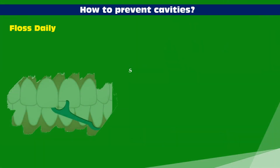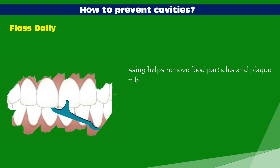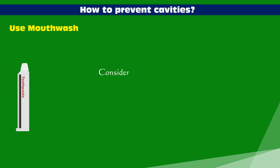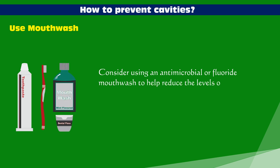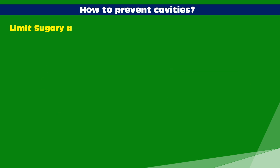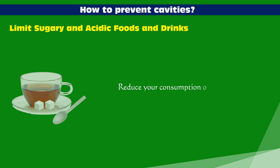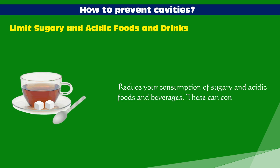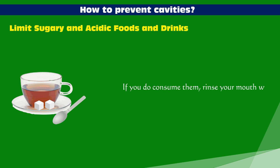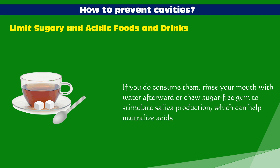Floss daily: flossing helps remove food particles and plaque from between your teeth and along the gum line where your toothbrush might not reach — make it a daily habit. Use mouthwash: consider using an antimicrobial or fluoride mouthwash to help reduce bacteria in your mouth and strengthen your teeth. Limit sugary and acidic foods and beverages, as these contribute to plaque formation and acid production. If you do consume them, rinse your mouth with water afterward or chew sugar-free gum to stimulate saliva production, which can help neutralize acids.